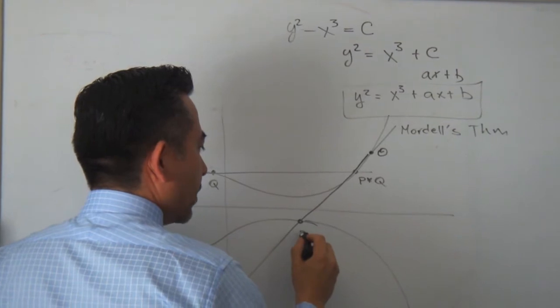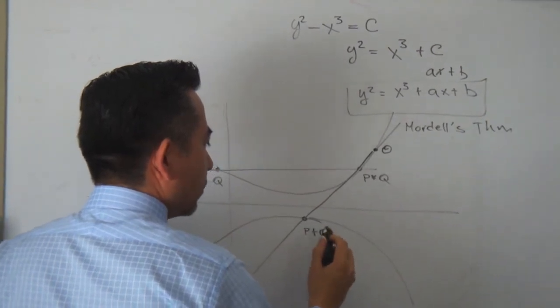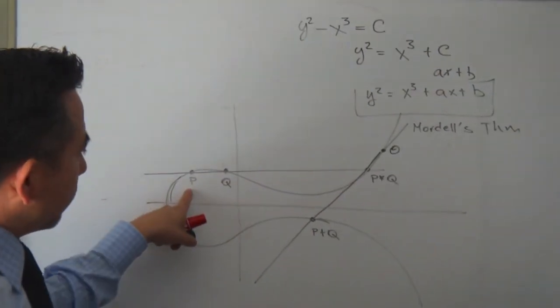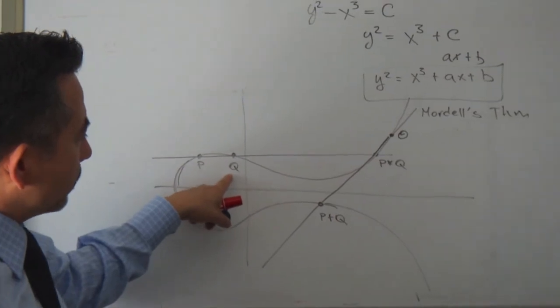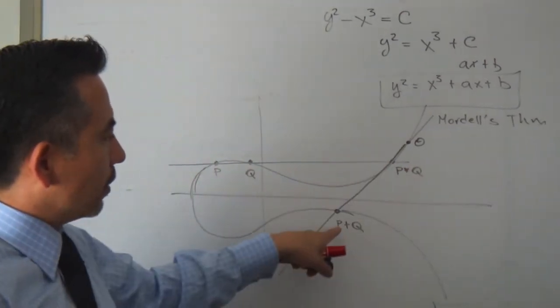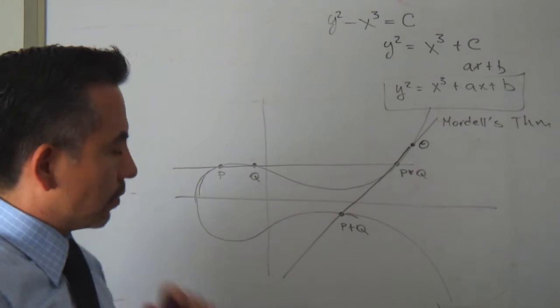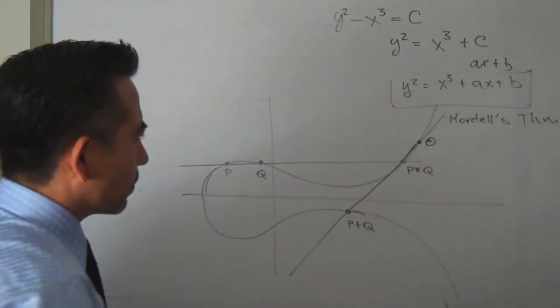This reflection will be my p plus q. So if this point and these points are rational, then this point is rational, and this point is rational.